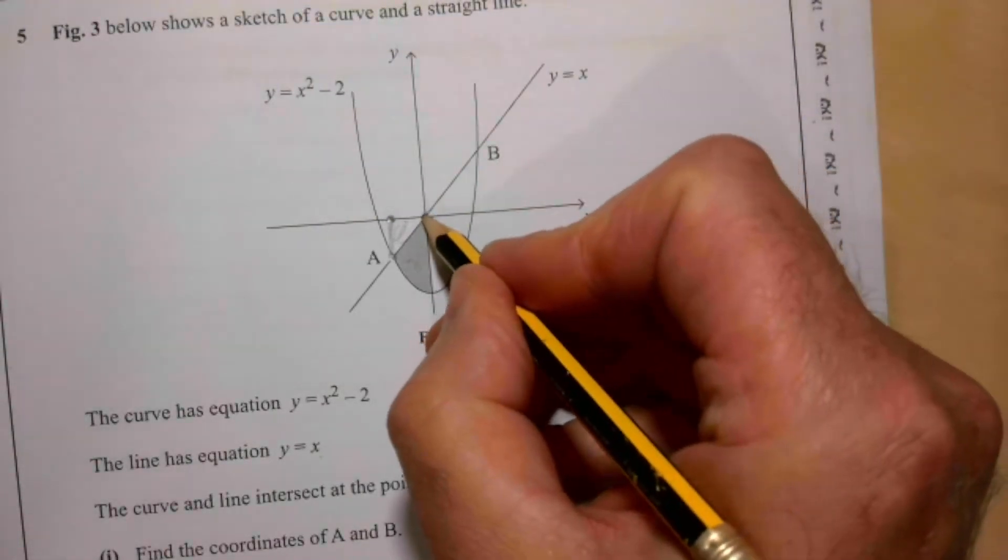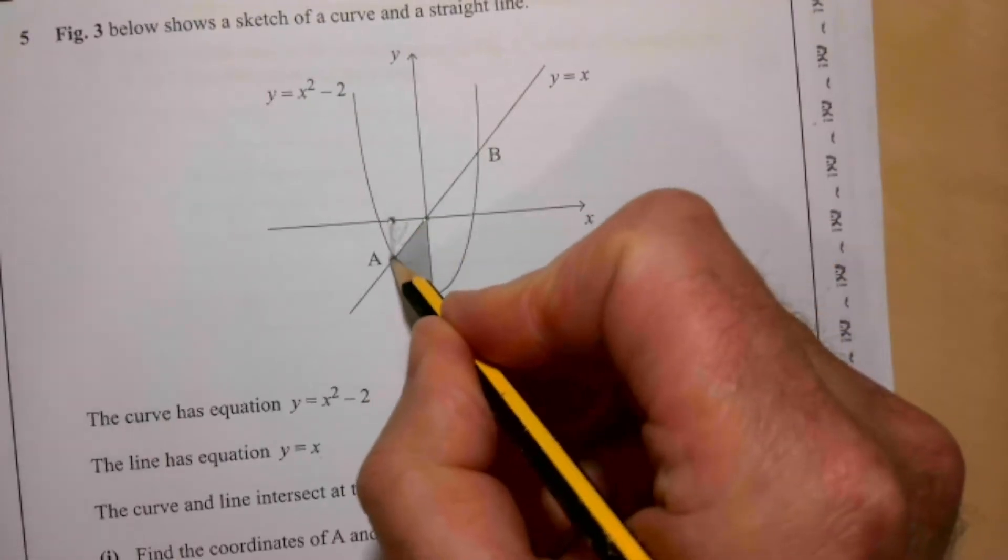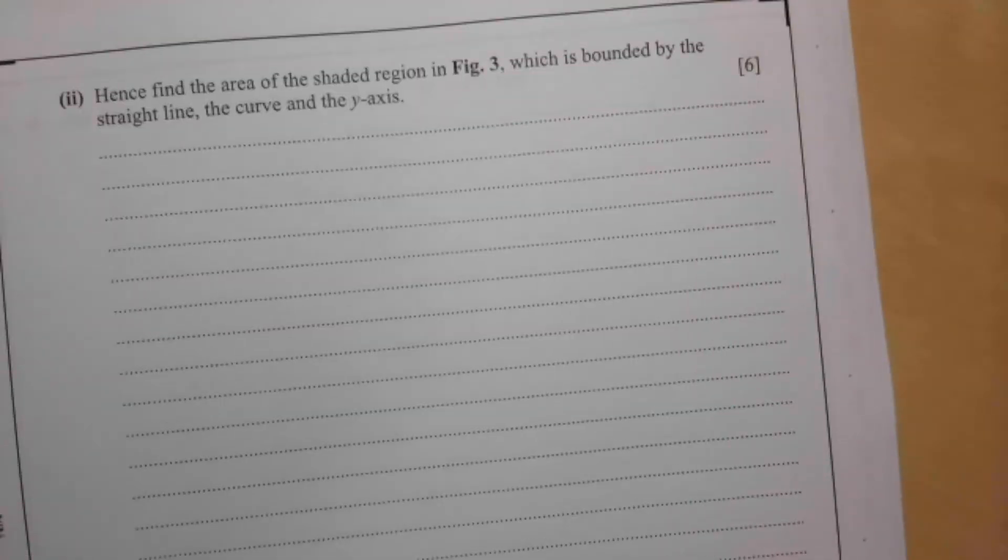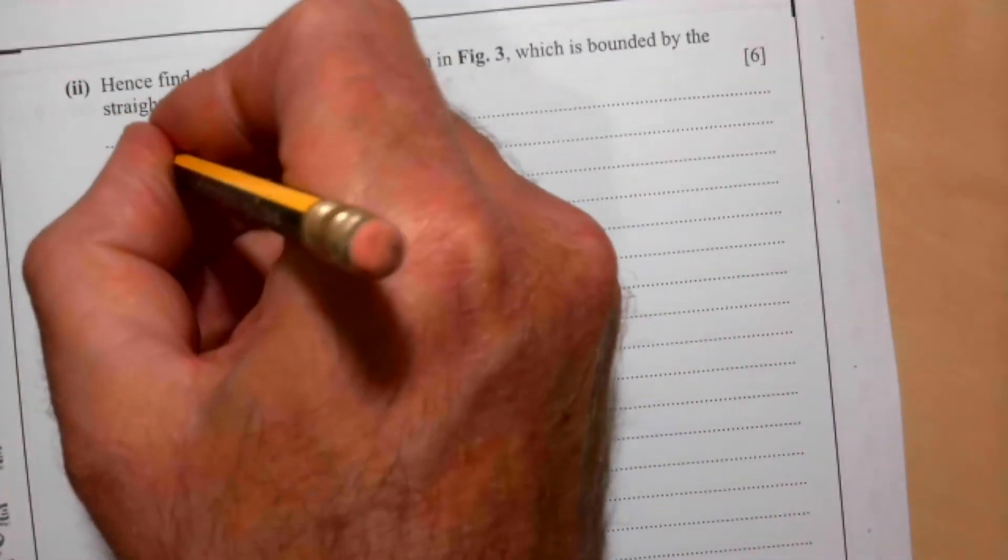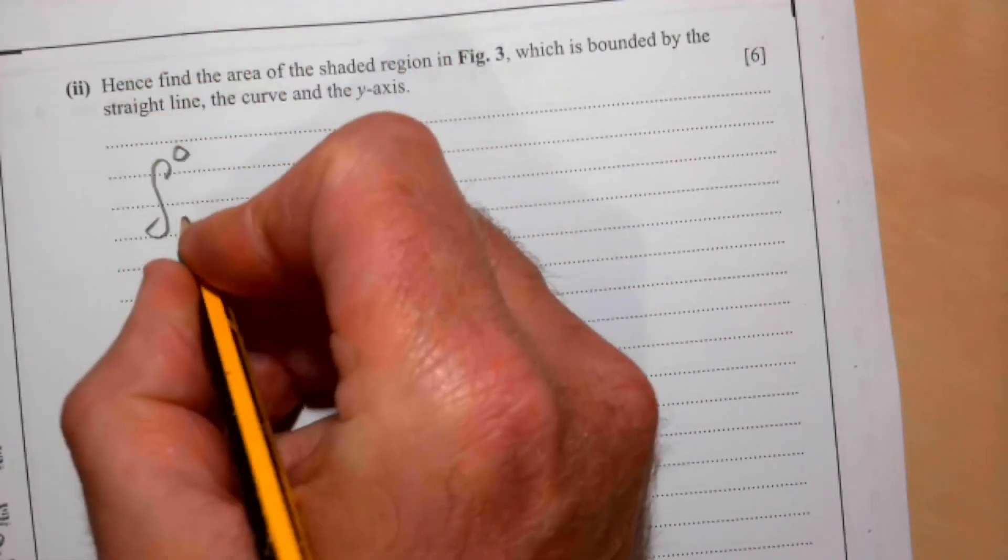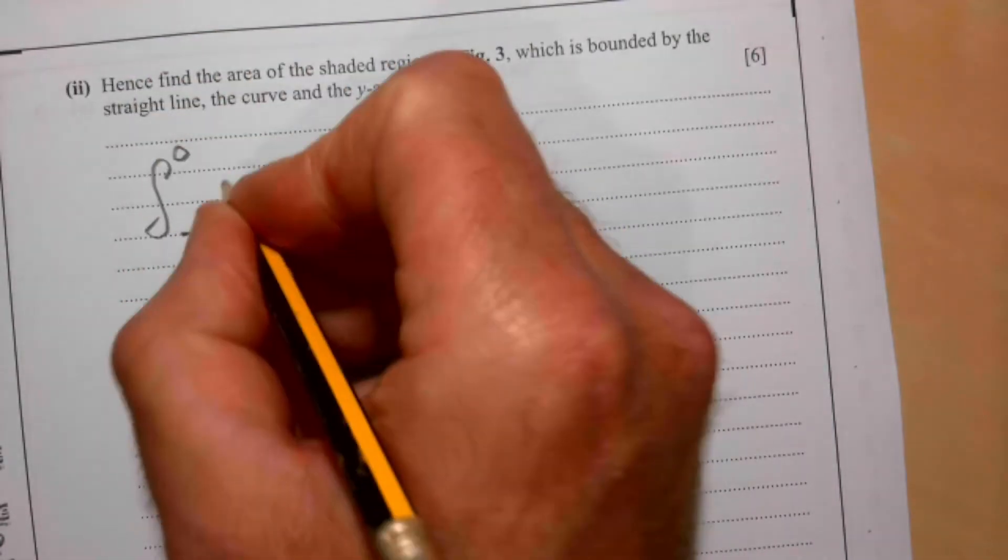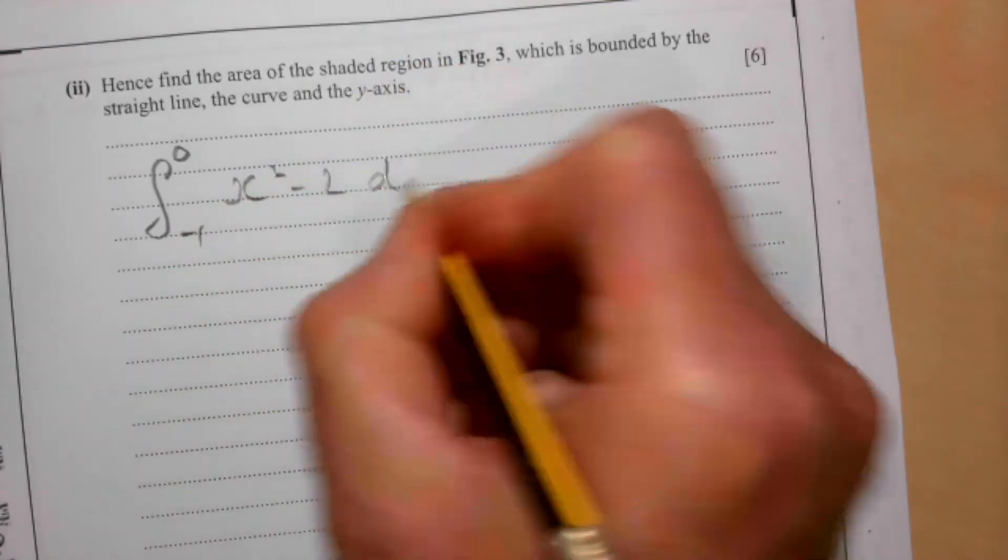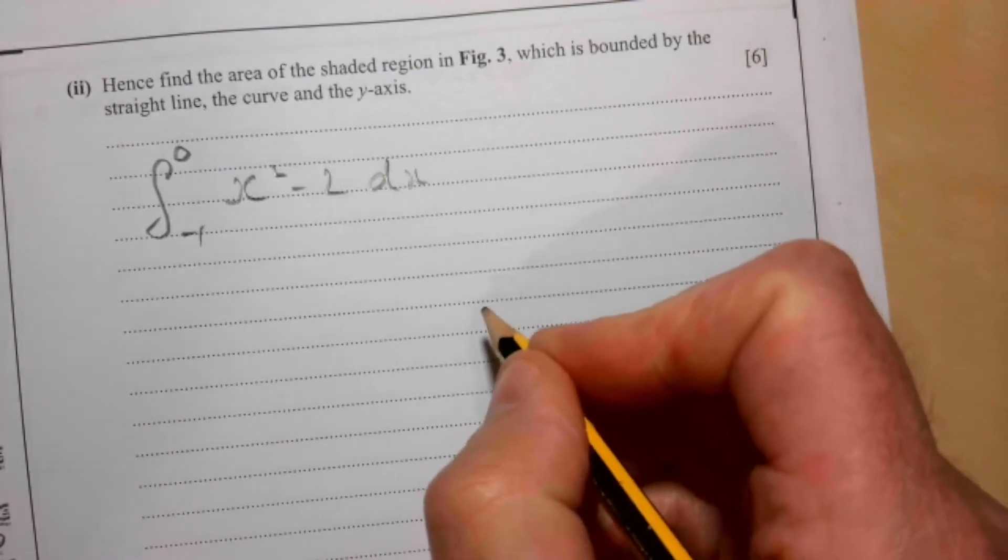So we're going to integrate between 0 and minus 1, because we've just worked out that this coordinate here is minus 1. We've just written it down below, minus 1. So we do the integral of that, and then see if we can get an answer from there. So we're going to integrate between 0 and minus 1, and the curve we are integrating is x squared minus 2 with respect to x.